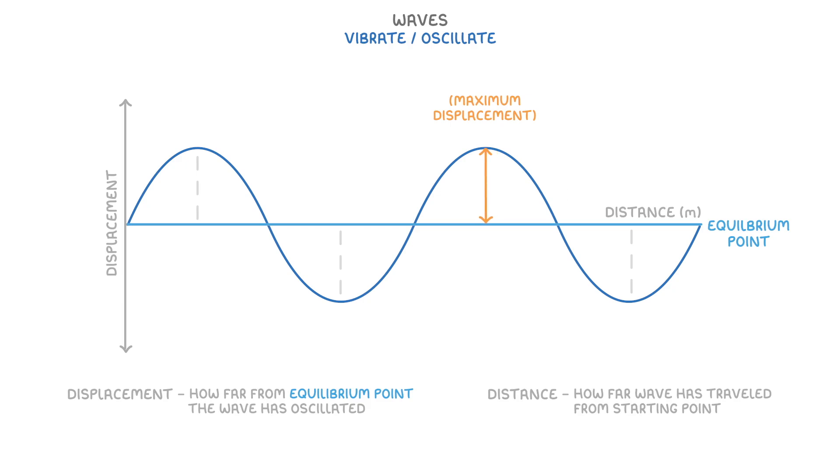The maximum displacement is known as the amplitude, while the distance of one entire oscillation is called the wavelength. So that could be from equilibrium, up, down and back up. Or it could be from the very top of a wave, which we call the crest, down and back up to the next crest. It just has to be one entire oscillation. And the opposite of the crest is called the trough.